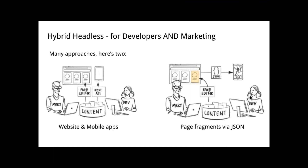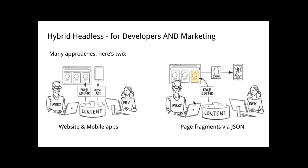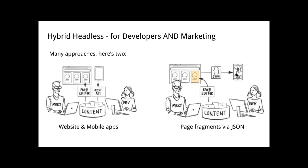Here we see the marketing and developer working together. The developer is using some front-end framework and just getting the content via JSON. But this is more sophisticated than the first example, because the marketer is actually using the page editor — they're actually creating an experience, placing components where they want them. This structure of the page is then delivered as JSON as structured content, and the developer can work with that structured content. Based on the layout, they can either present exactly the same thing the marketer saw or display it in a different way.